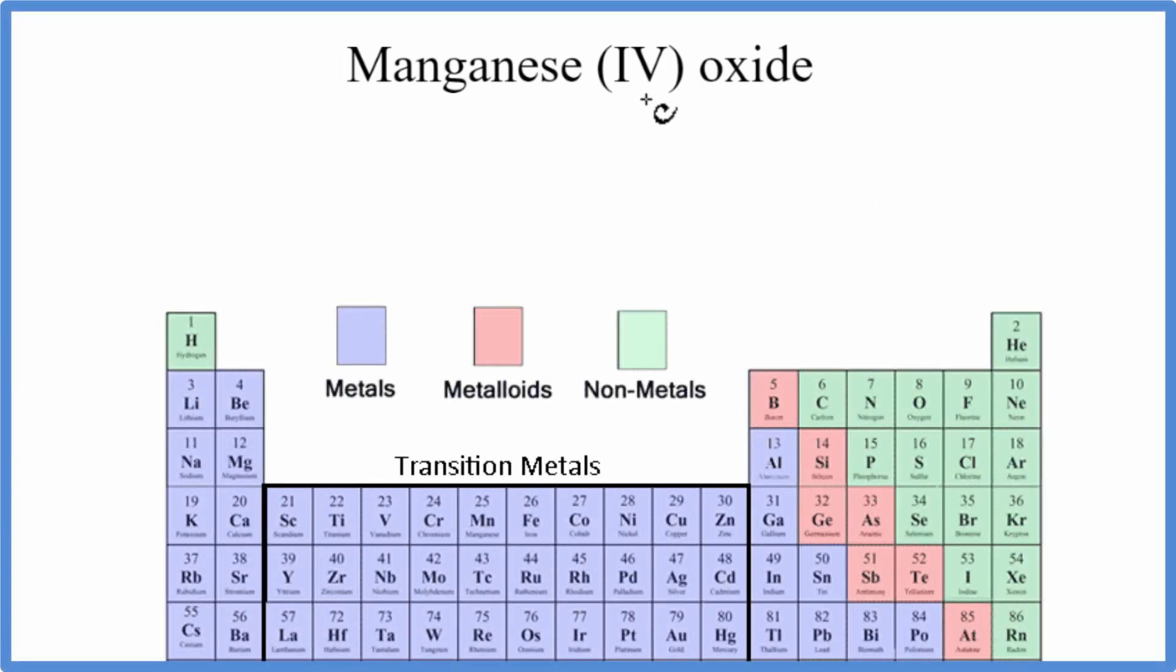To write the formula for manganese(IV) oxide, we'll go to the periodic table. Manganese, that's Mn, and oxide - we're talking about oxygen. Manganese is a metal and oxygen is a non-metal, so this is an ionic compound, and we need to think about these ionic charges for each element when we write the formula.